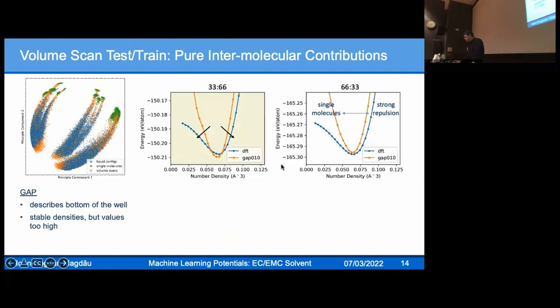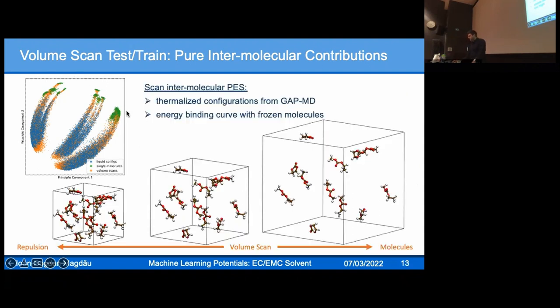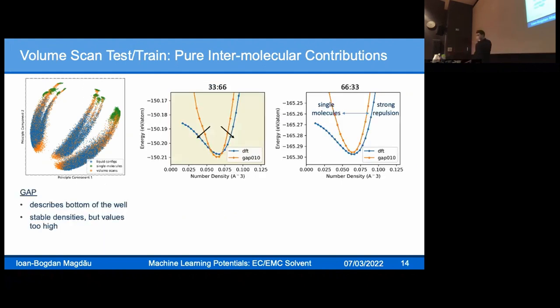This is important for intramolecular degrees of freedom too, because this training set so far has not seen, for instance, hydrogen-hydrogen dimer curves. We put this information in implicitly by going to a really repulsive regime where all atoms come together and we sample that region of the repulsion curve. It's actually helpful to look at volume scans on a PCA plot. If the thermal liquid configs are in blue and single molecules in green, you see how the volume scans draw the connection between thermalized liquid configurations and the single molecule regime, and in the other direction extrapolate into the repulsive regime.